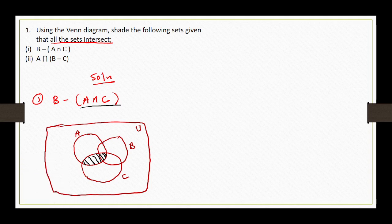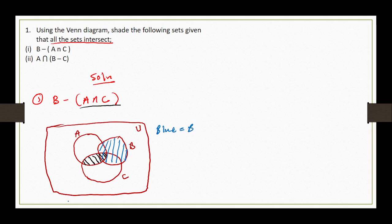I've used blue for set B and black to represent A intersection C. So blue is for set B and black is simply representing A intersection C. From the question, we are saying B minus (A intersection C), meaning from B we are removing A intersection C.